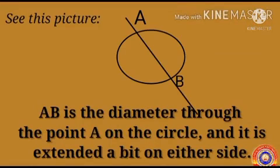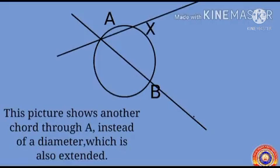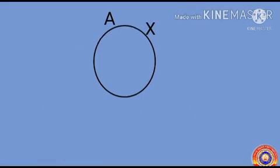See this picture. Here AB is the diameter through the point A on the circle, and it is extended a bit on either side. This picture shows another chord through A instead of a diameter, which is also extended.